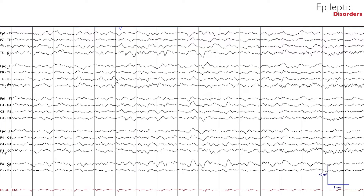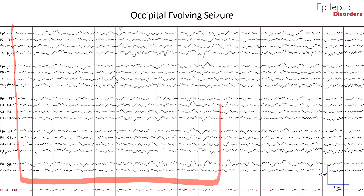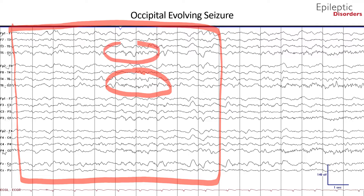The next seizure we will talk about is an occipital evolving seizure. In this page one bipolar montage EEG, we see initial delta and theta frequency activity between 1 to 4 hertz, outlined by the red square. Within the red square, appreciated by the red circles, you can see low amplitude fast frequency activity over the O1 and O2 channels, representing something insidious about to occur.